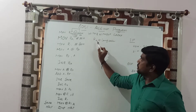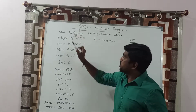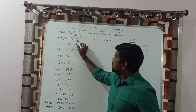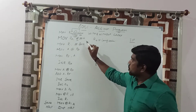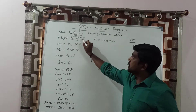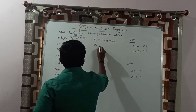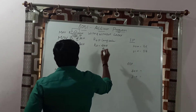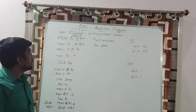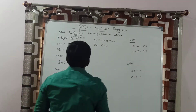The second instruction is MOV R1, #20H. This 20H is the immediate data. After execution of this instruction, 20H is transferred to the R1 register. Then the third instruction is MOV R0, #30H — it is also an immediate value. This content is transferred to the R0 register. After execution of this instruction, R0 register content is 30H.